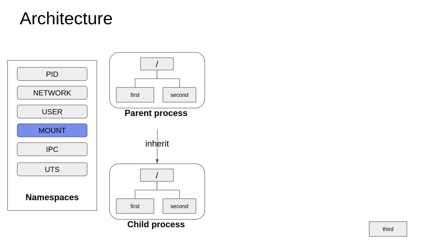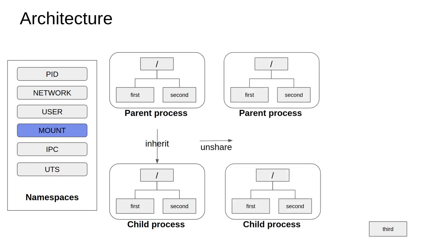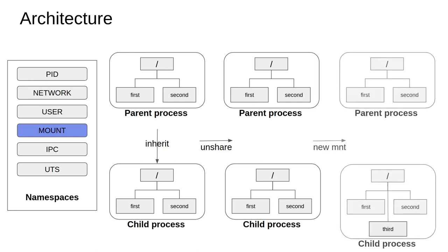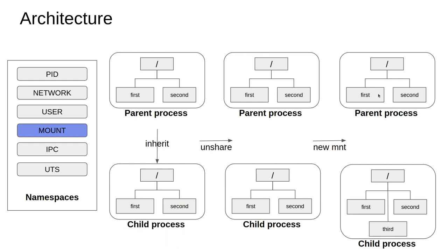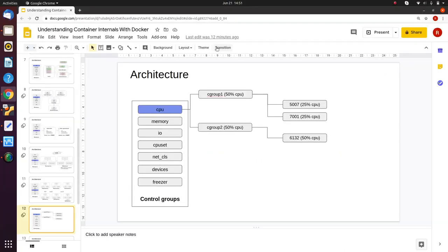When the parent process starts, the child inherits all the mount points from there. When we `unshare` the child's namespace, the child process becomes independent of the parent. When a new mount is created — for example, a mount point called `third` — that mount point is independent of the parent process. This is what we actually want to happen.